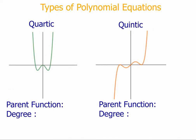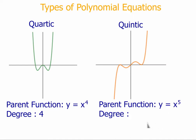We're also going to be looking at quartic graphs, which have a parent function of y equals x to the 4th and a degree of 4, and quintic functions, which have a parent function of y equals x to the 5th and a degree of 5.